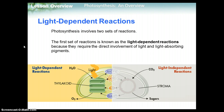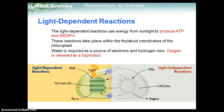There are two types of reactions in photosynthesis. The first type is called light-dependent reactions. They're called light-dependent because they require the direct involvement of light and light-absorbing pigments — you need light for them to happen. The light-dependent reactions use energy from sunlight to produce ATP, the energy molecule, and NADPH, the electron carrier. These reactions take place within the thylakoid membranes of the chloroplast. Water is required as a source of electrons and hydrogen ions, and oxygen is released as a byproduct.